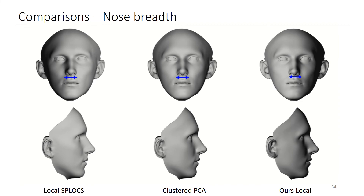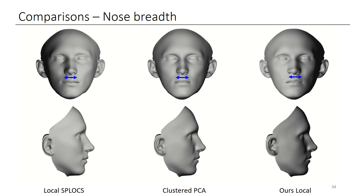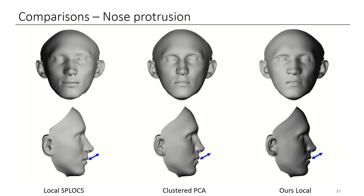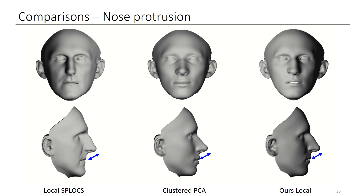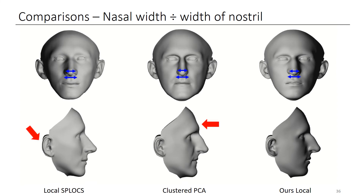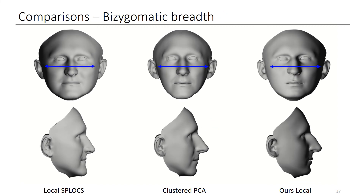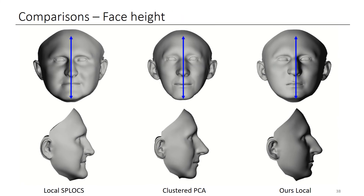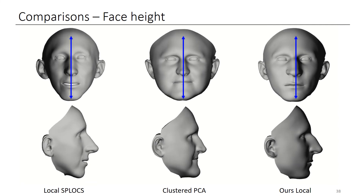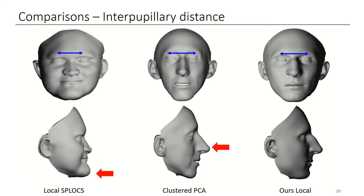We will now compare SPLICE, cluster PCA, and our approach adjusting multiple anthropometric measurements of different facial parts. The two rows show the same face from front and side views. First, we increase the nose breadth, then we make a protruding nose, then we decrease the value of nasal width divided by width of nostrils. Our adjustments are more local compared with the other methods. We increase the width of the face from the widest part, make the face slimmer by increasing face height, and when increasing the interpupillary distance, SPLICE and cluster PCA resulted in deformation all over the face. We refer the reader to the paper for additional comparisons.